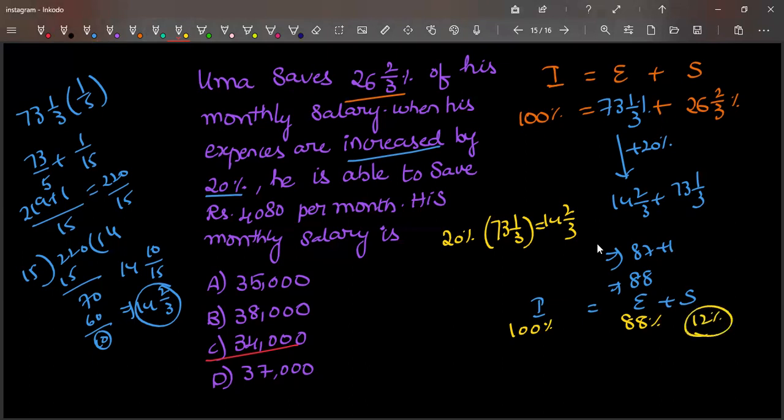That new savings was given as 4,080 rupees. So 12 percent is 4,080, and we were asked to find his monthly salary, which is income. His income is 100 percent.